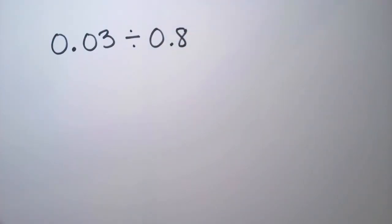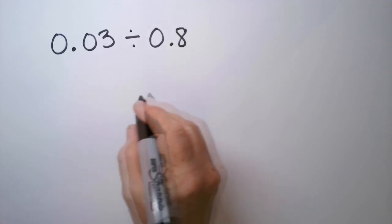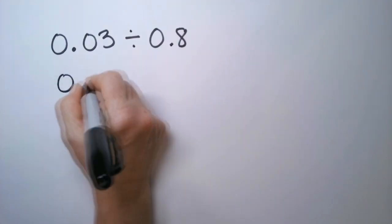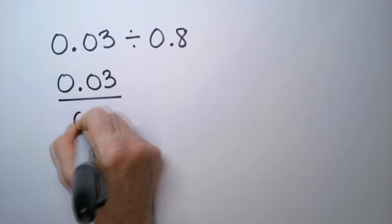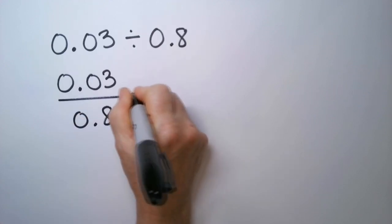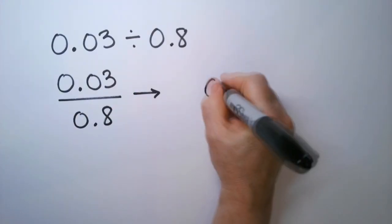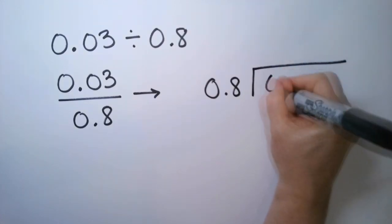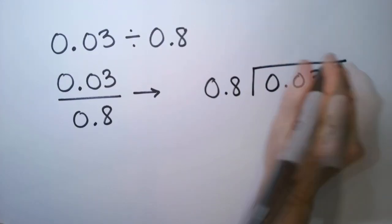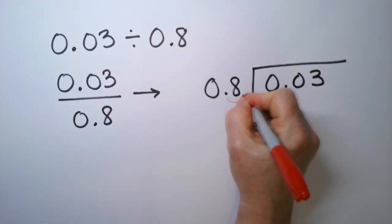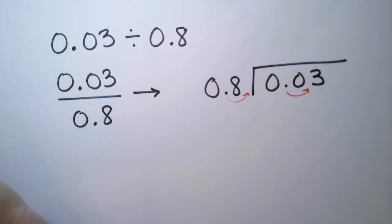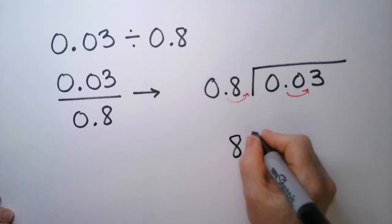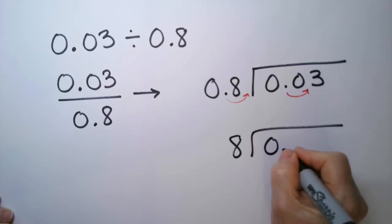What if the numbers are really small? Let's try this one. So this is going to be 0.03 divided by 0.8. So that's going to look like 0.8 and 0.03. So this is going to go one hop this way. My problem becomes 8 into 0.3.